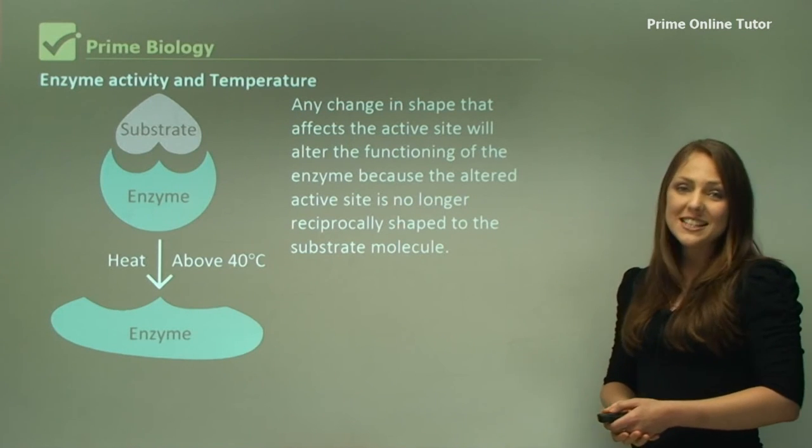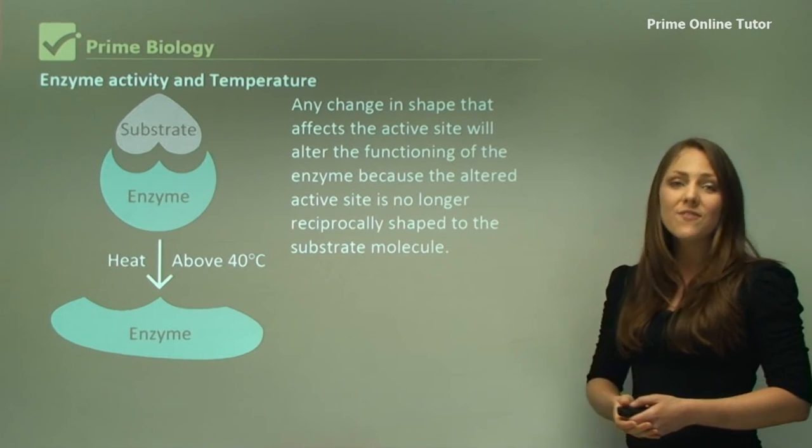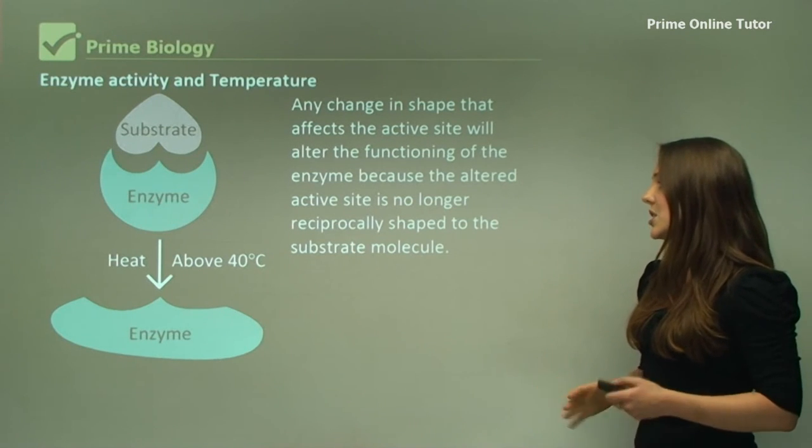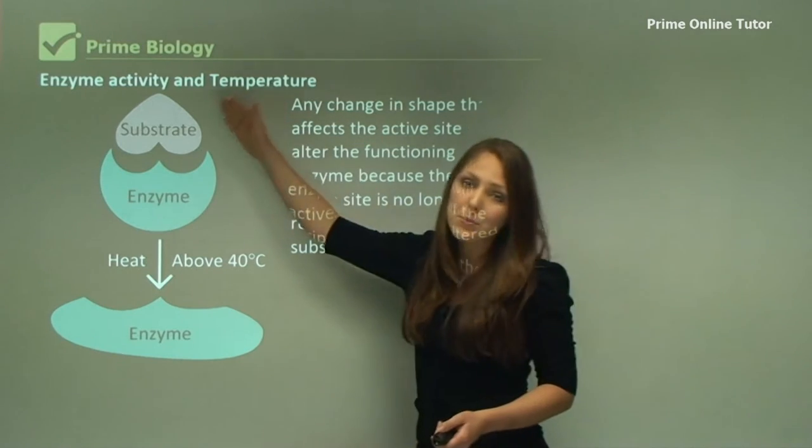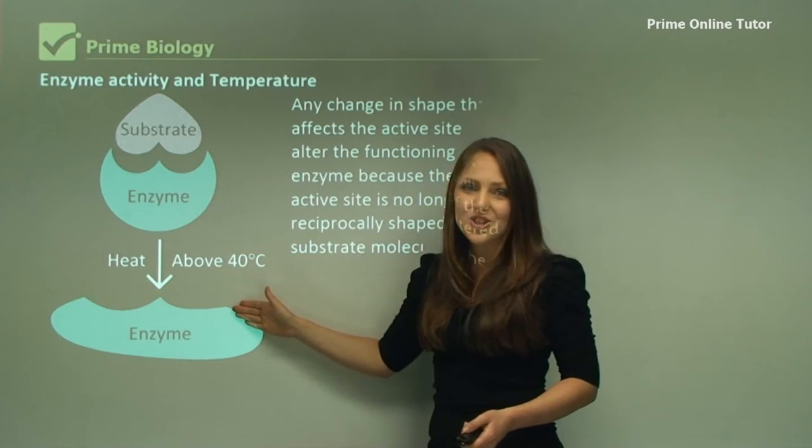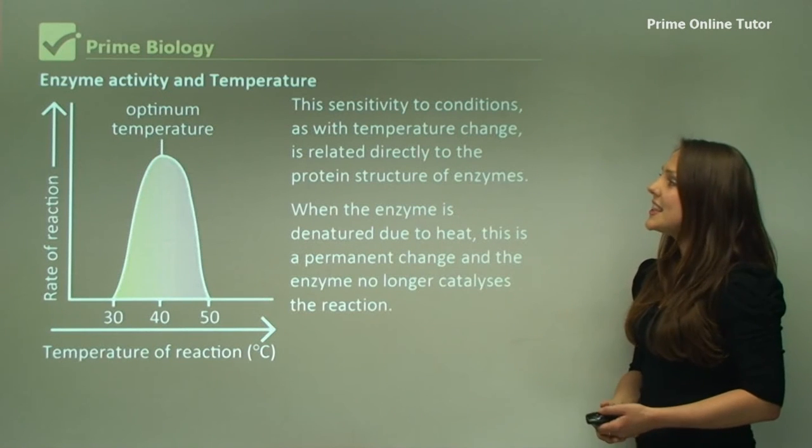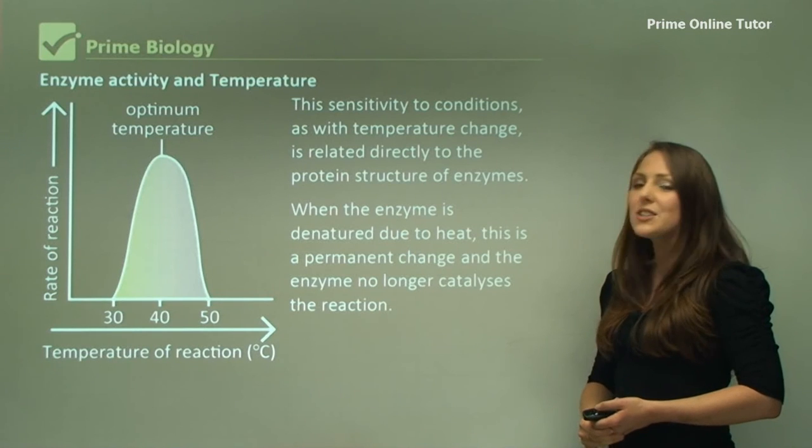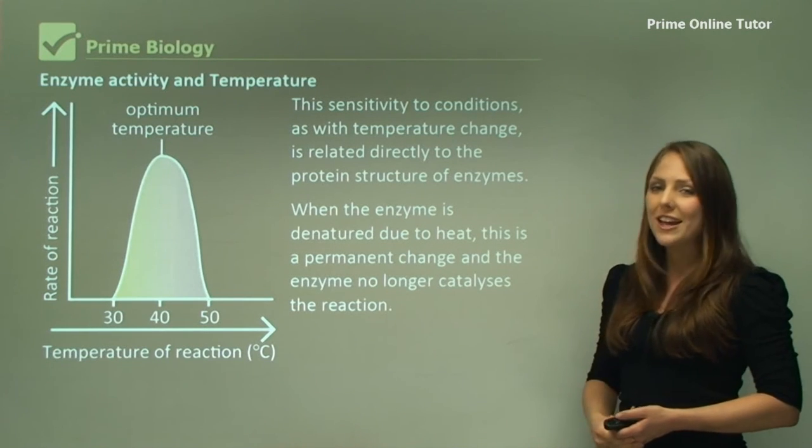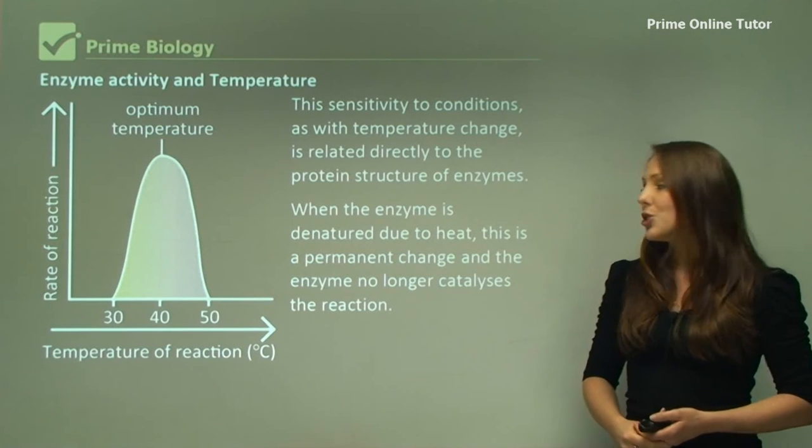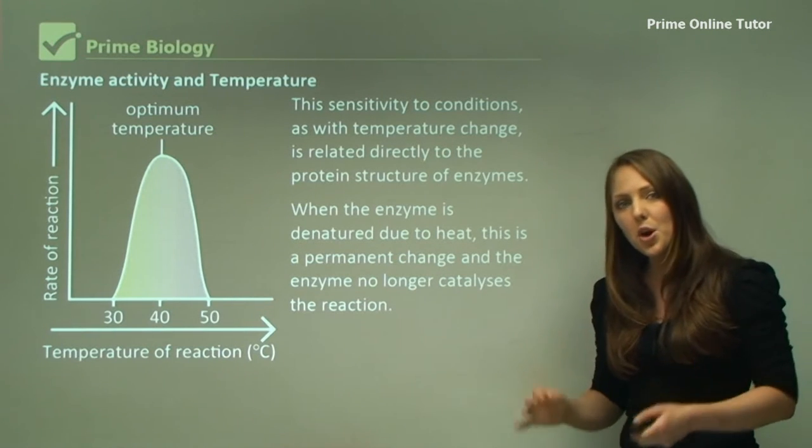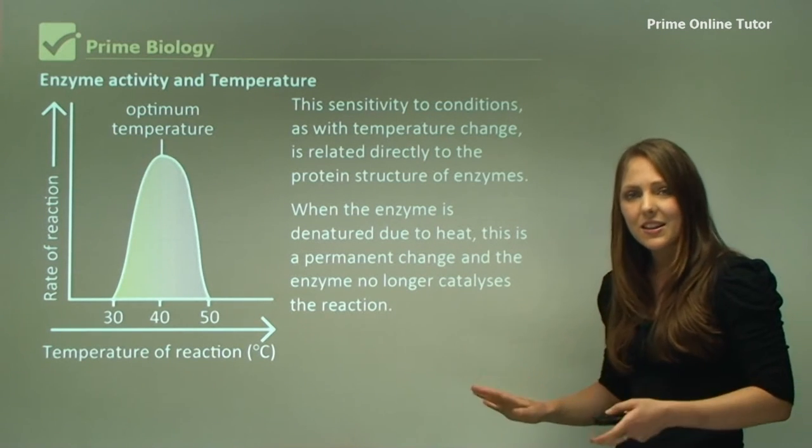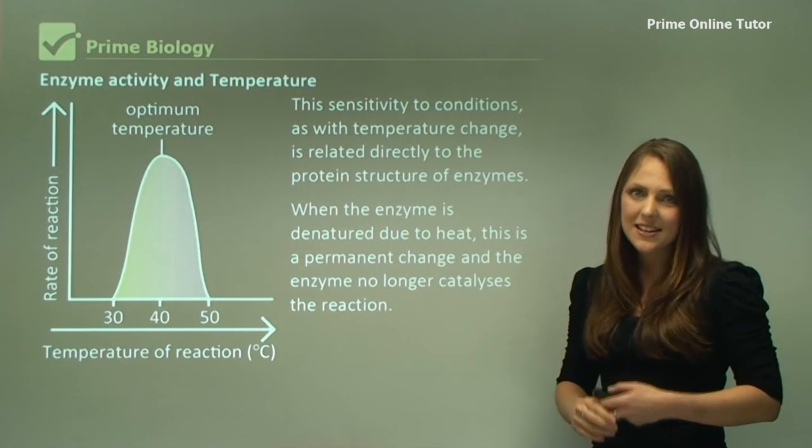Any change in shape that affects the active site will alter the functioning of the enzyme because the altered active site is no longer reciprocally shaped to the substrate molecule. This substrate will not fit into this active site. This sensitivity to conditions as with temperature change is related directly to the protein structure of enzymes. When the enzyme is denatured due to heat this is actually a permanent change and the enzyme can no longer catalyze the reaction. This means that the enzyme will stay in its denatured form.